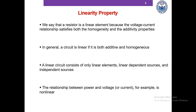A resistor is a linear element because the voltage-current relationship satisfies both the homogeneity and additivity properties. In general, a circuit is linear if it is both additive and homogeneous. A linear circuit consists of only linear elements, linear dependent sources, and independent sources.